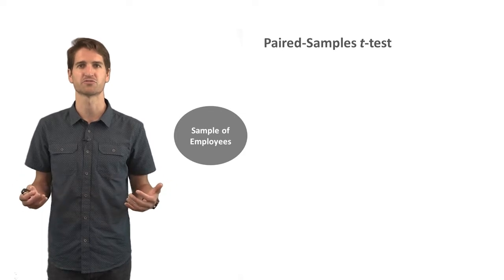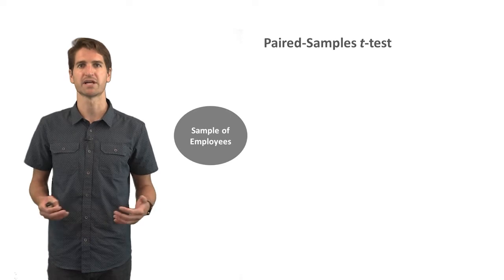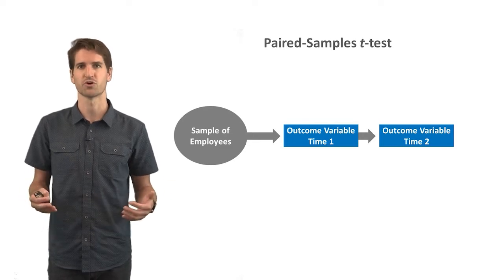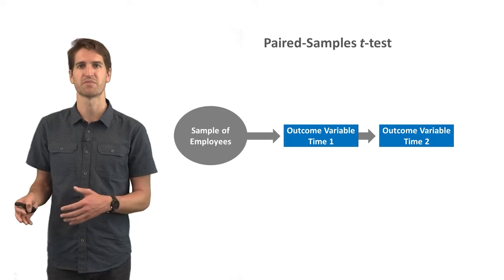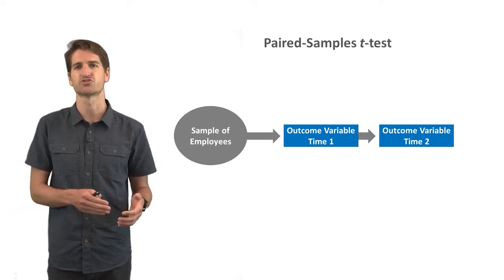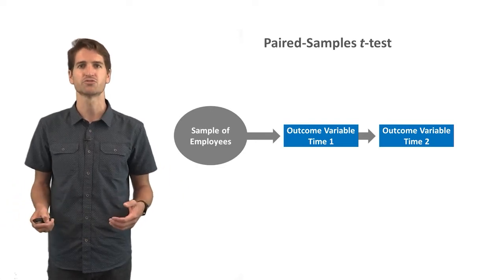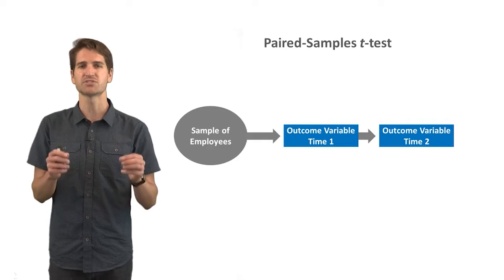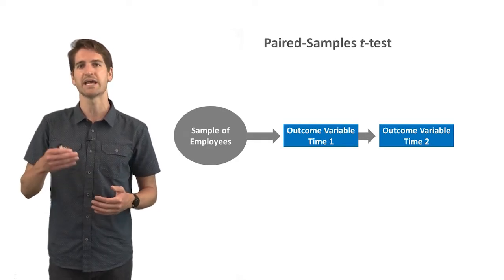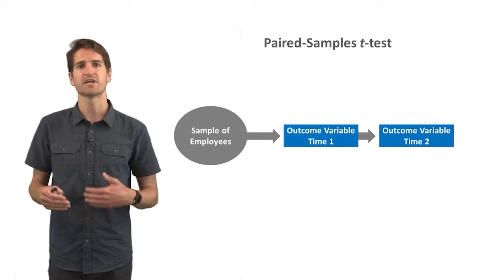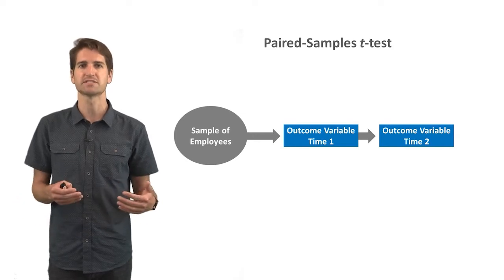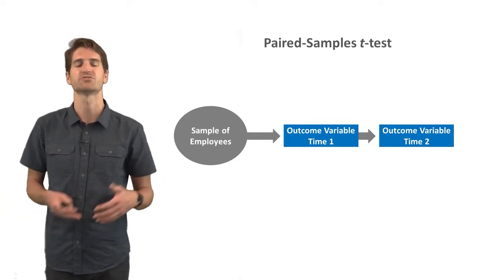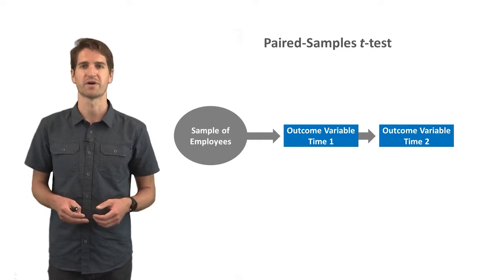Since this is a human resource management class, let's imagine we have a sample of employees who get assessed at two time points on the same measure — a pre-test and a post-test, with a training program in between. What's important to remember is that it's the same group of employees completing the outcome variable measure at both time points. This creates dependency in their responses, meaning we no longer have an independent group at each time point.